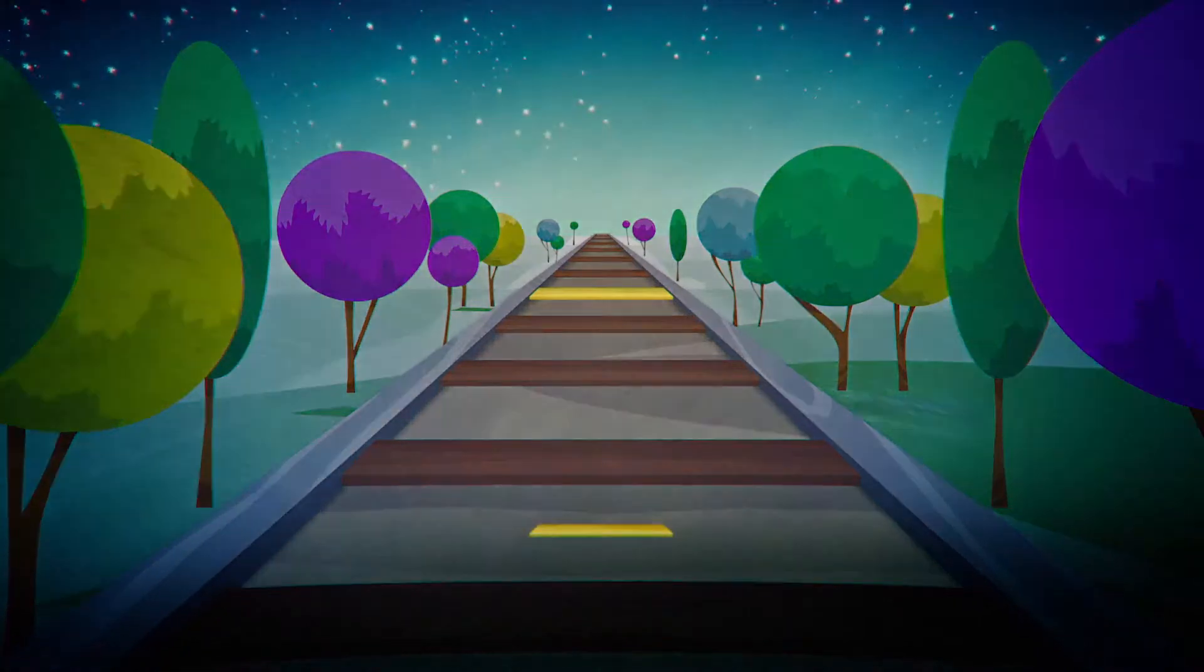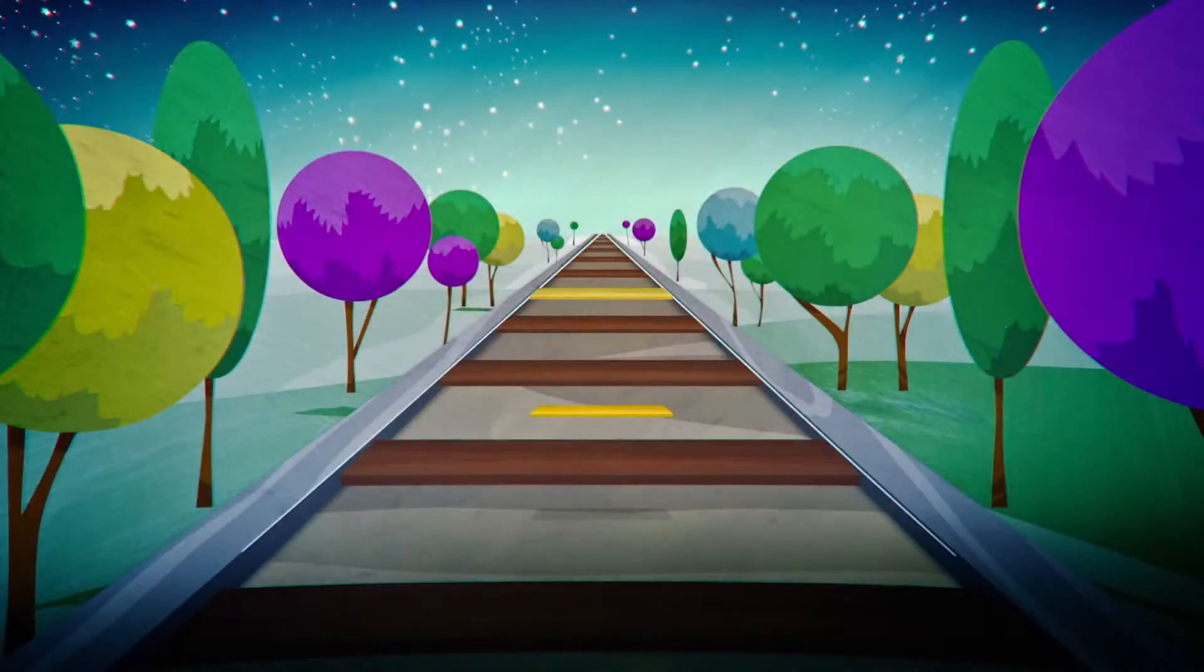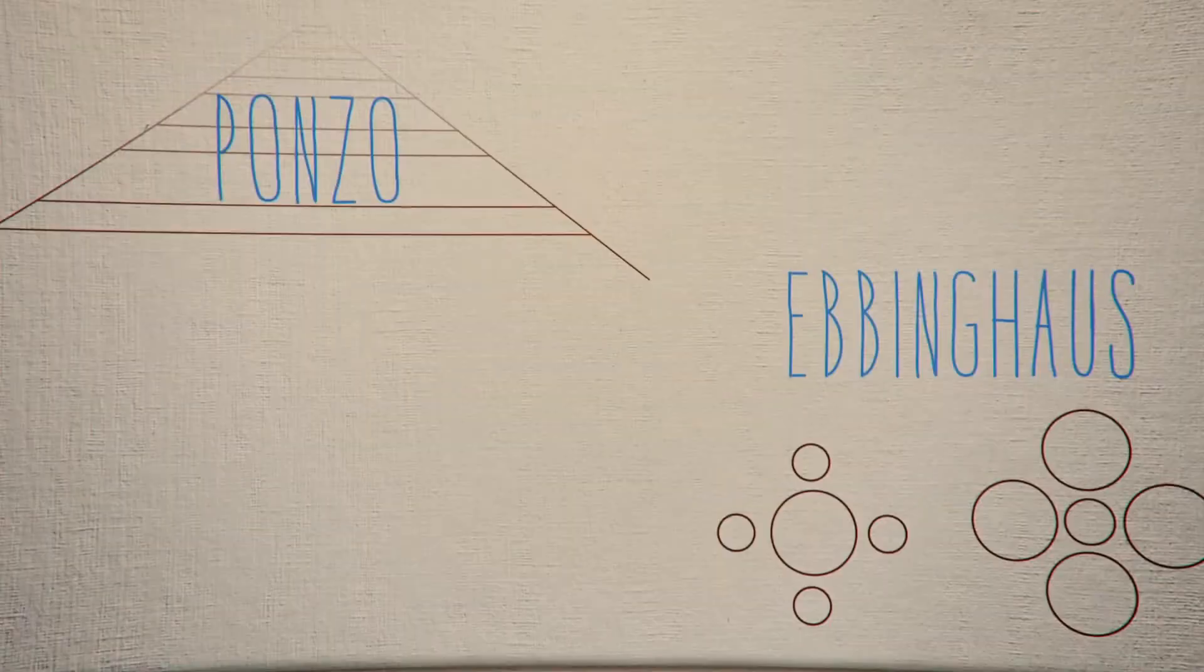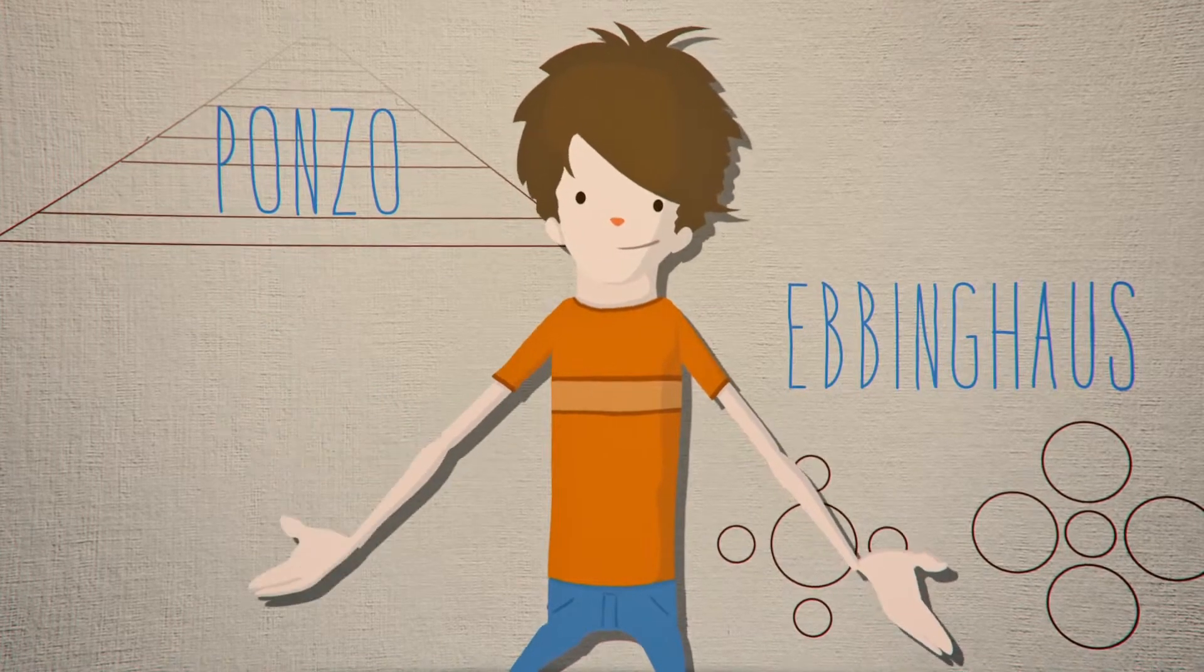The two yellow lines in this drawing are the same size, but the upper one seems bigger because we interpret it as receding farther into the horizon. So between Ponzo and Ebbinghaus, it seems like we've solved the mystery of the moon illusion.